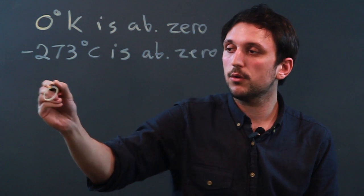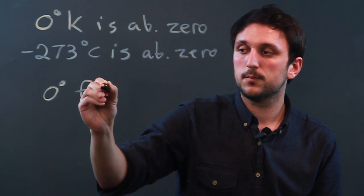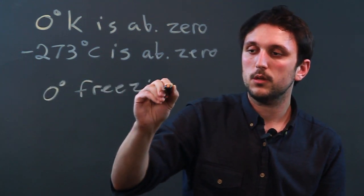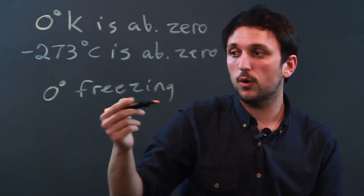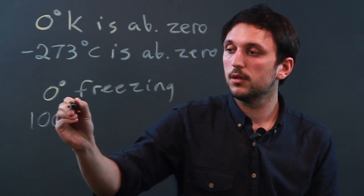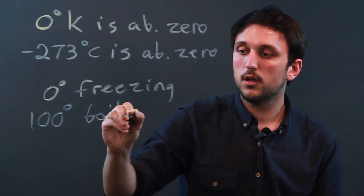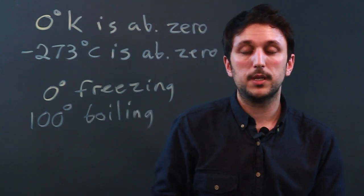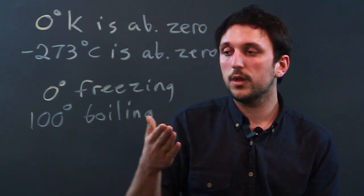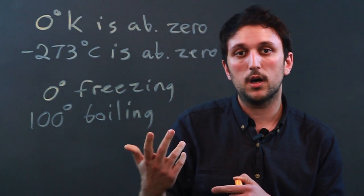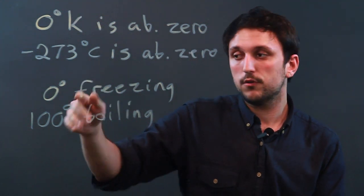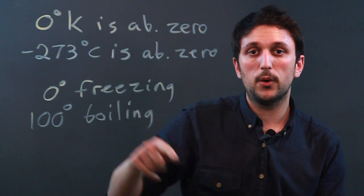With Celsius, you have zero degrees freezing point of water and 100 degrees is the boiling point of water. Now water happens to be on Earth a lot, so we developed Celsius to measure the most important substance on Earth, which is water. So zero freezing, 100 boiling.